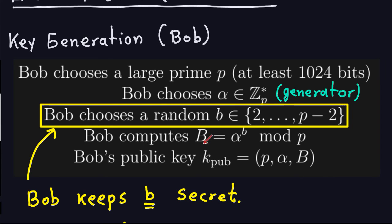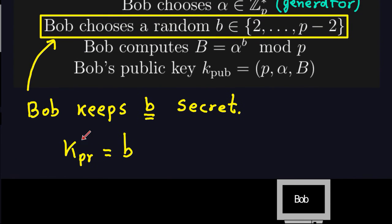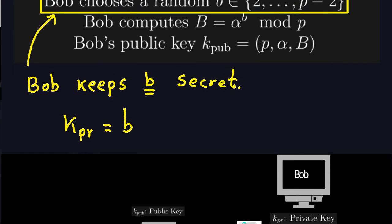Bob computes the number b, which is the generator raised to that random number modulo the prime. This b is part of the public key. So Bob's public key is the prime p, the generator alpha, and b computed in this way — exactly the same as we did for the ElGamal encryption. The private key is just that number chosen at random.